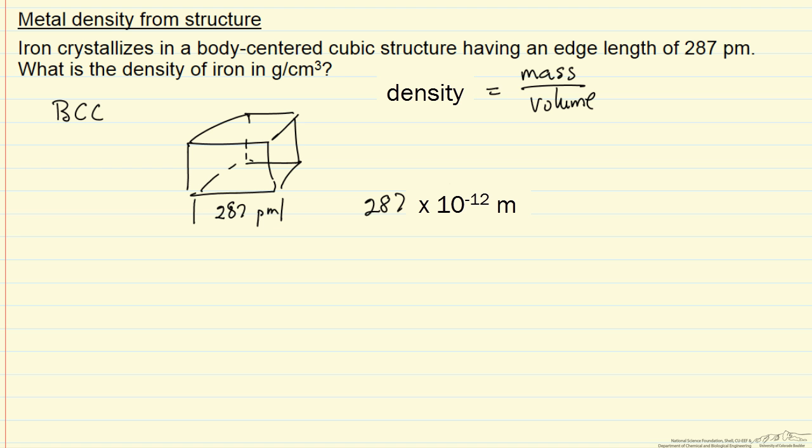We want to determine the mass. From the periodic table, 55.85 grams per mole. We need the number of grams for an atom because we are looking at just this cube, and this cube is going to contain an atom in the center plus an atom in each corner, but they are shared amongst 8 of these cubes.